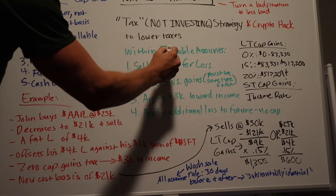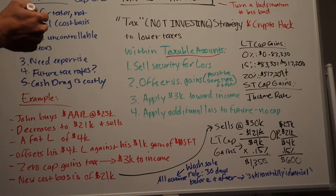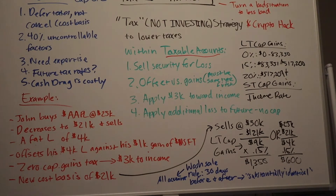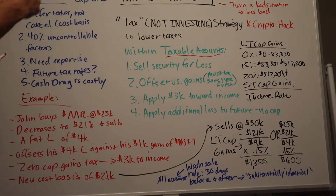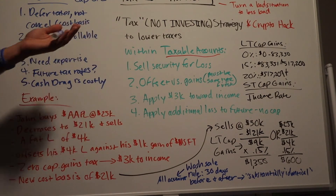This is only for taxable accounts — it has nothing to do with retirement accounts, IRAs, 401(k)s, solo 401(k)s. Capital gains does not apply to retirement accounts. If you buy and sell in a 401(k), there's no capital gains tax. So this is only for taxable accounts, such as a brokerage account. If you were down big in your 401(k) or IRA and don't have a taxable brokerage account, this is irrelevant to you.